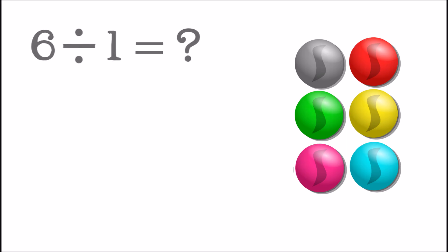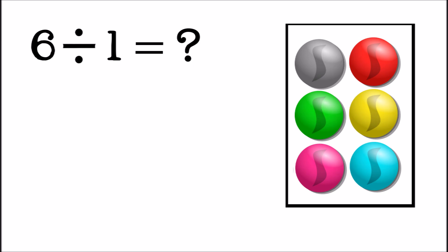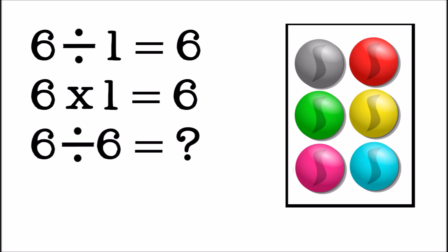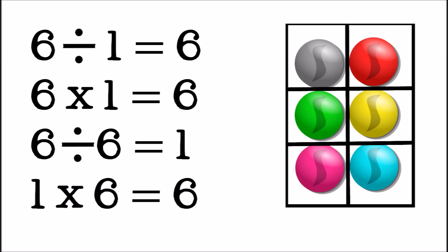Now what happens if you divide something by one? Let's try six divided by one. If you have six things and divide them into one group, how many are in that group? Six. Any number divided by one is the same number you started with. What if we divide a number by itself, like six divided by six? If you divide six things into six equal groups, how many things are in each group? One. Anything divided by itself equals one. You can check this too by looking at the related facts.